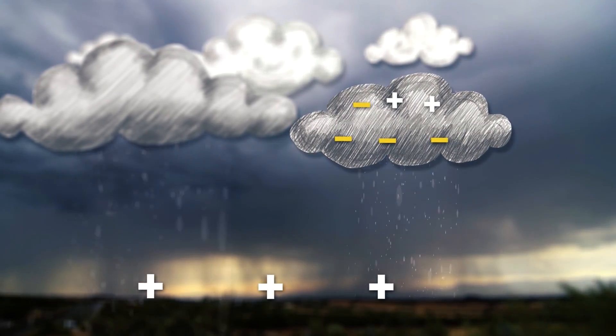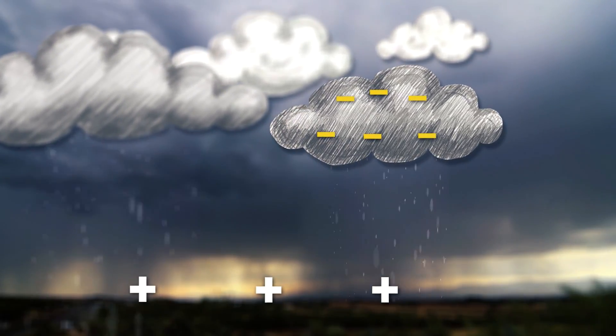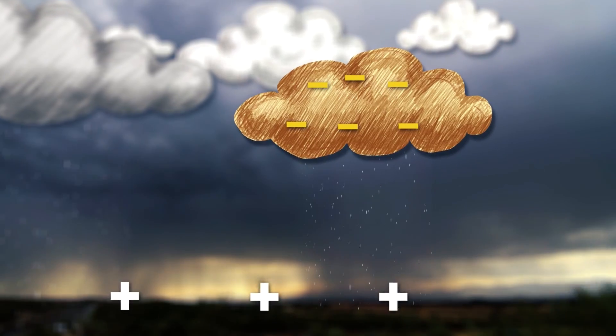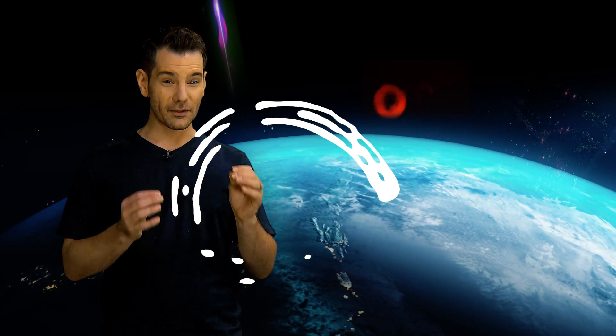When a lightning bolt strikes the ground, it can leave the top of the thunderstorm with some negative charge. This creates bursts of electromagnetic activity in the upper atmosphere. And it's believed that those bursts are TLEs, the sprites, the elves and the blue jets.